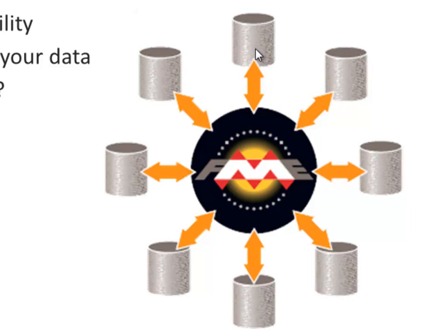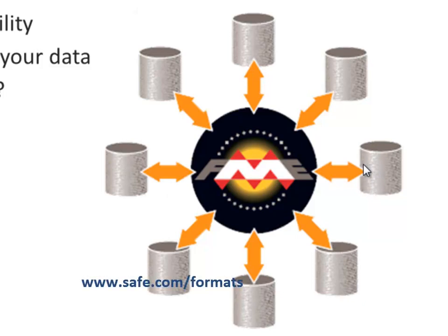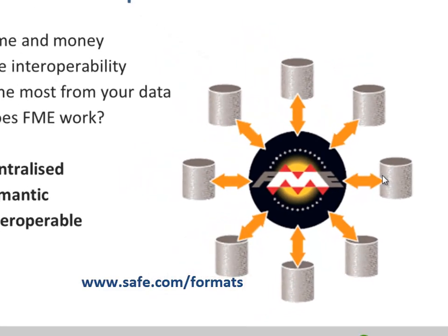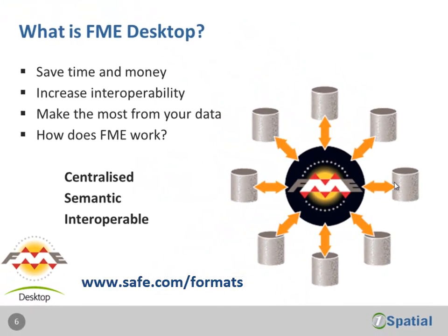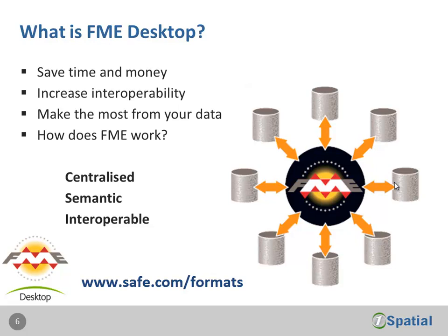What the engine does is understand exactly what formats it can work with. For example, imagine this format is MapInfo Tab — you can read the data, pass it through FME, and write out an ESRI shapefile. In another process, you could read an ESRI shapefile and write that to MicroStation DGN. But FME knows that NTF is a format you can't write into — however, you can read out of it. For more about supported formats, go to safe.com/formats.